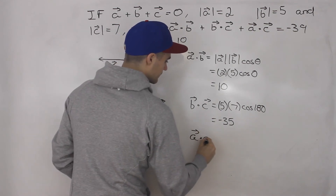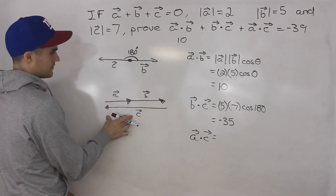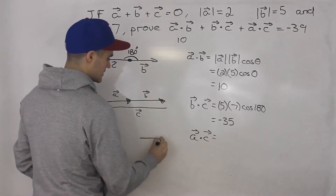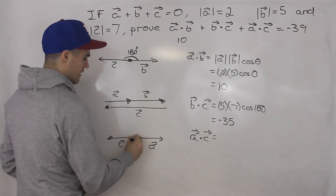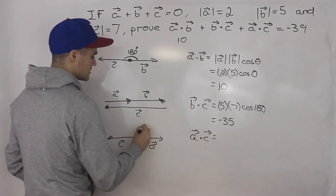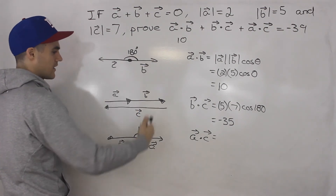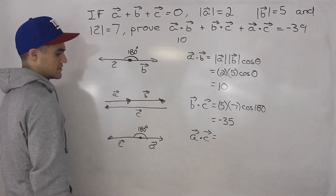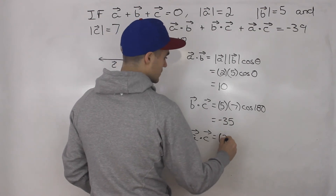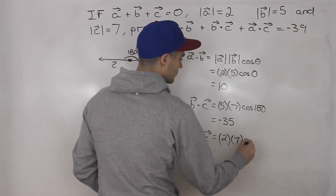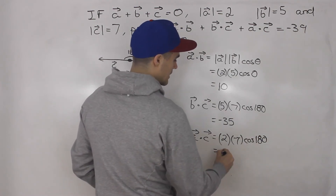And finally, a dot c. Drawing vectors a and c together — this is a, and this here is c — the angle between a and c is 180 degrees as well, because a is going in the same direction as vector b, and then vector c is going in the exact opposite direction. So magnitude of a is 2, magnitude of c is 7, and the angle in between them is cos of 180. So 2 times 7 times cos of 180 gives us negative 14.